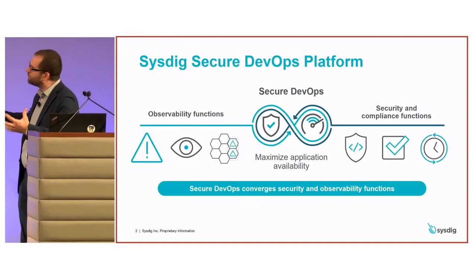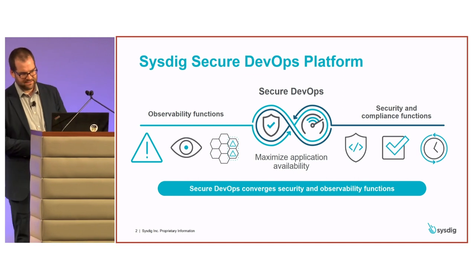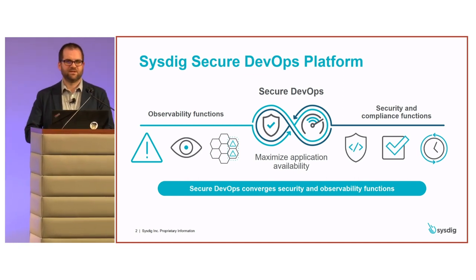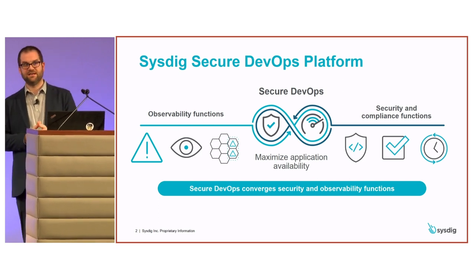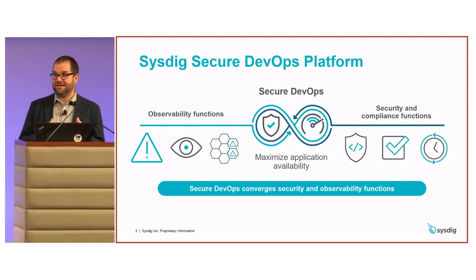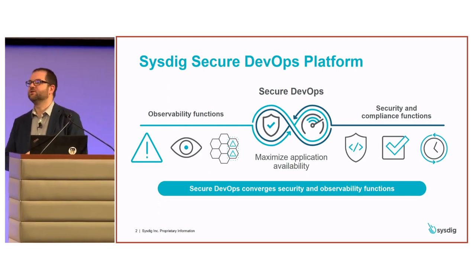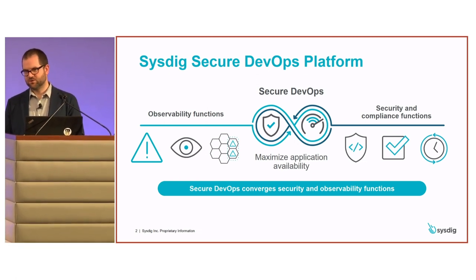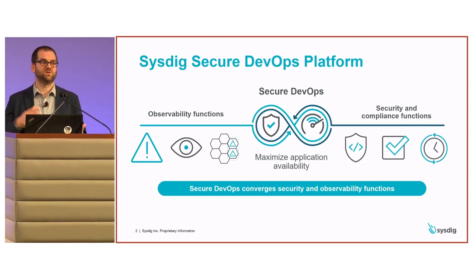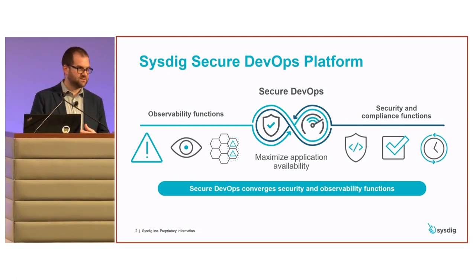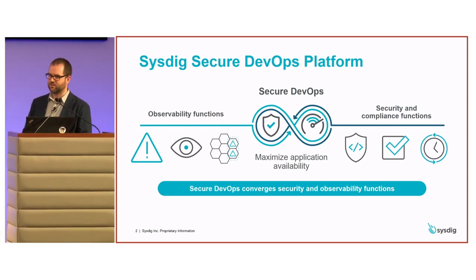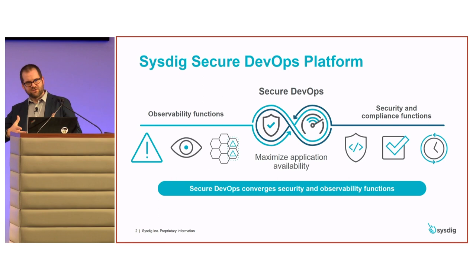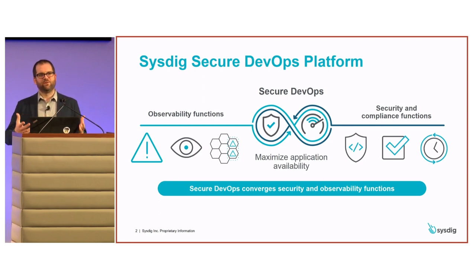Presenting Sysdig and the Sysdig Secure DevOps platform — one of the great things about OpenShift, and one of the things it's a pleasure working with the Red Hat team on, is that it is absolutely secure by default. There's a lot of security controls in there, not just in terms of OpenShift — you've got OpenSCAP and Insights and so on. So you've got a lot of this protection stuff already out of the blocks.